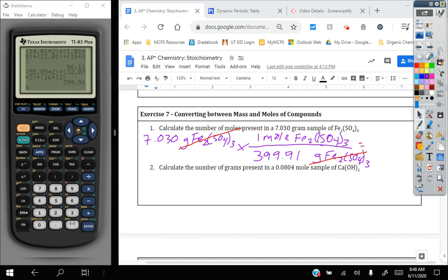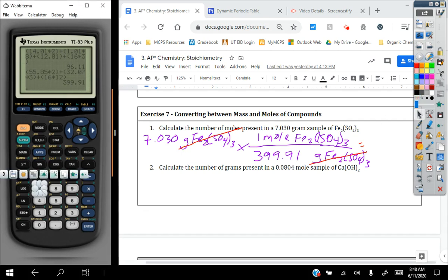So 7.030 times one over 399.91, close parentheses, and we get our answer in moles. Or the other way you could have done it is just by dividing by that molar mass of 399.91. You'll see you get the same answer here.